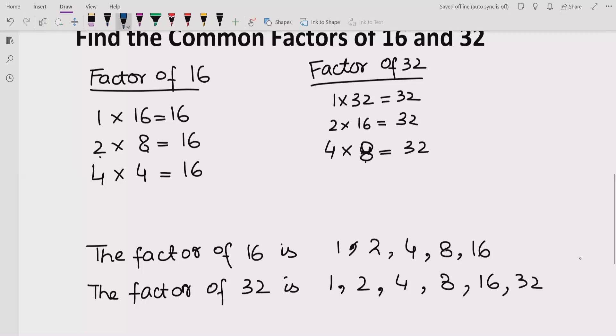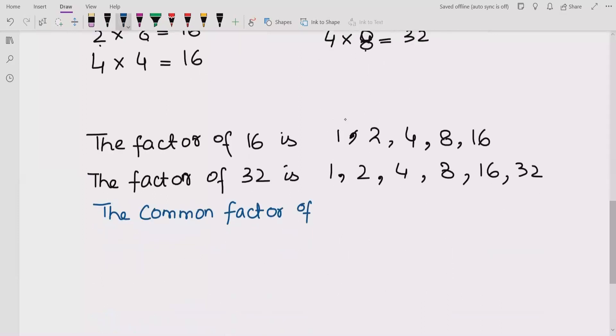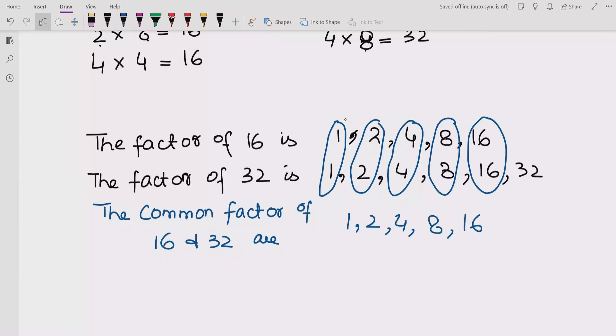So if we talk about the common factors, the factors of 16 are 1, 2, 4, 8, 16, and the factors of 32 are 1, 2, 4, 8, 16, 32. So the common factors are 1, 2, 4, 8, and 16. So these are the numbers which we can divide both numbers. 16 is divided by these numbers and 32 is divided by these numbers. So this is the common factor of these numbers.